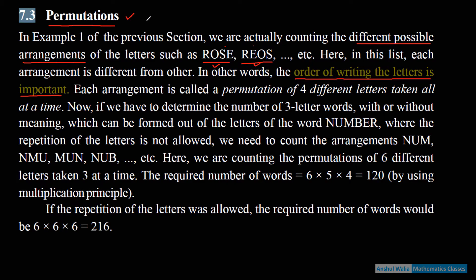This chapter is Permutations and Combinations. In combination, order is not important. For example, we have to select a tennis team. From 10 kids, I have to select 4 kids. Now who is first or who comes after — if A is first, B is after, or C is after, or D is after...